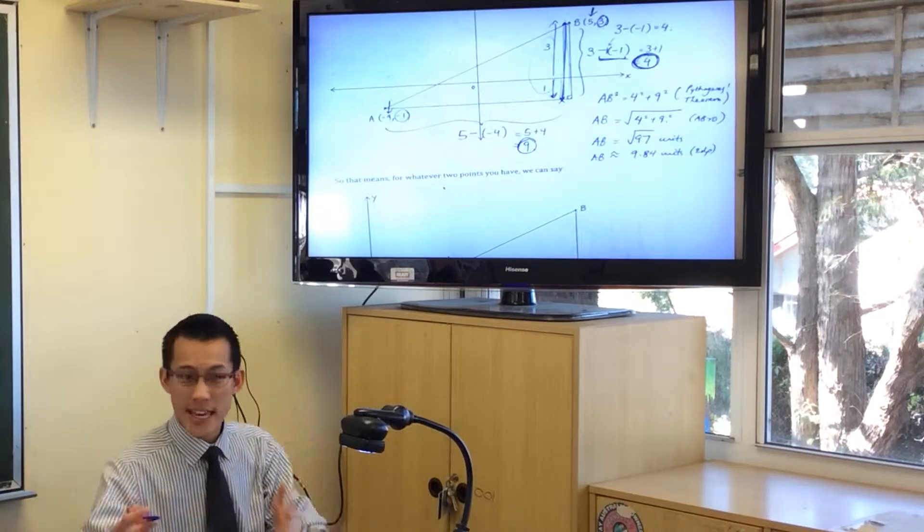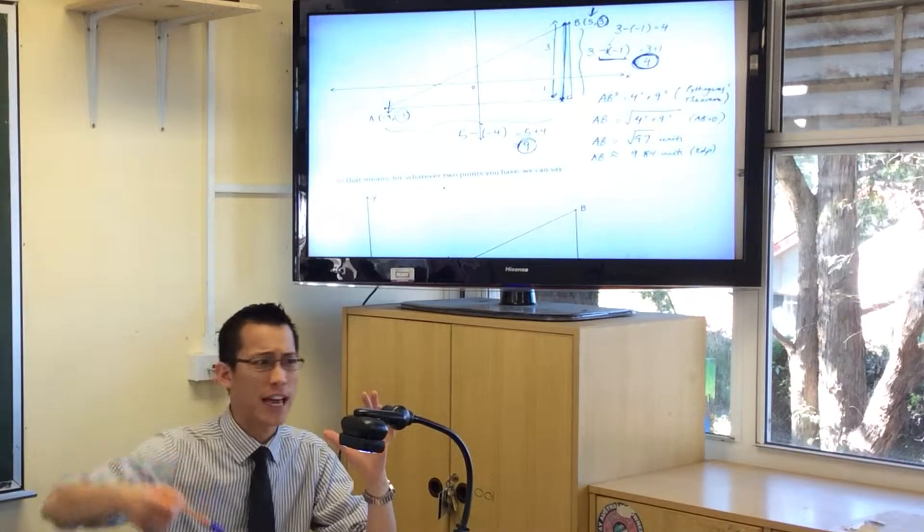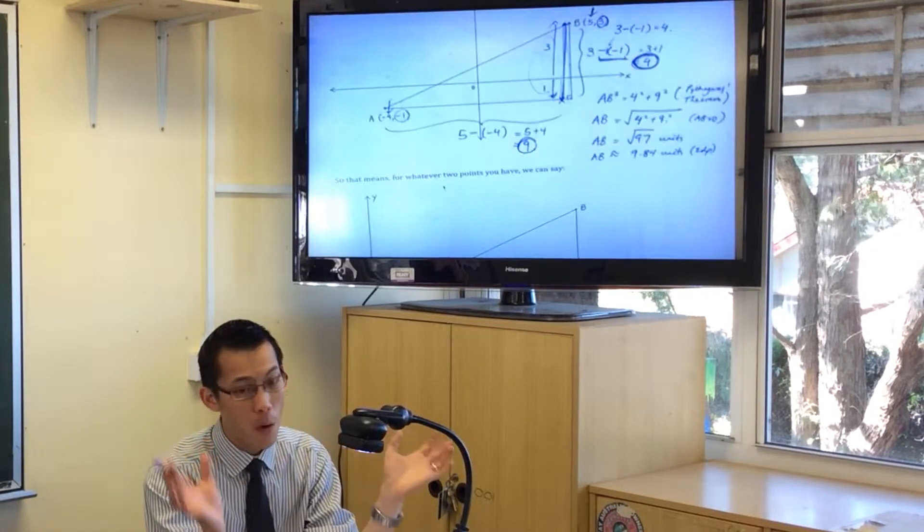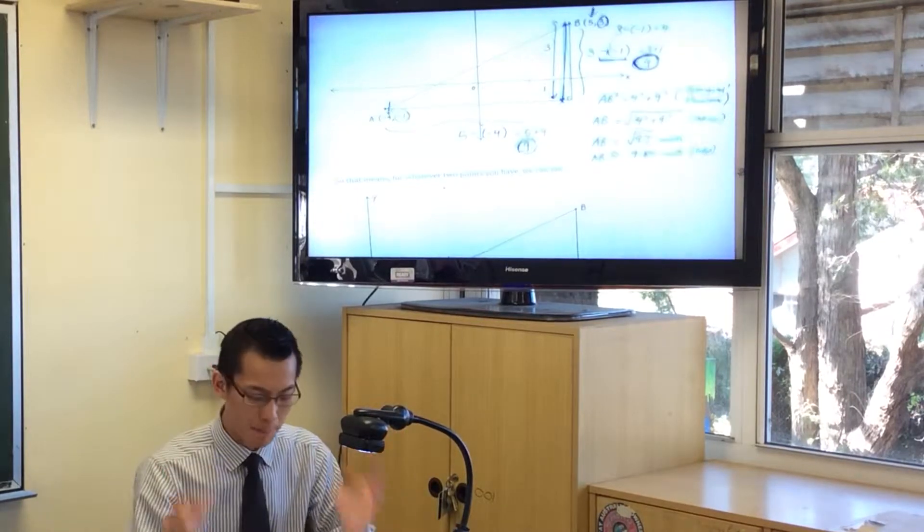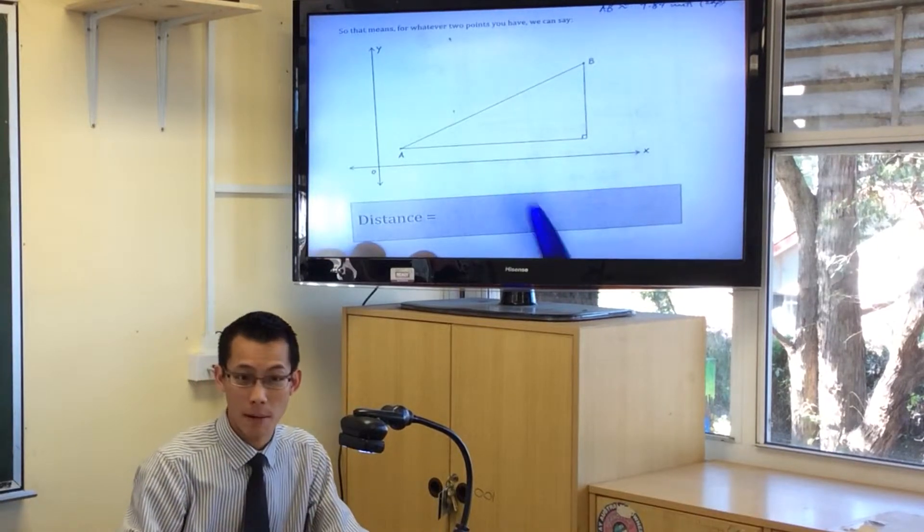Now, what mathematicians do is when they see there's a process, and we go over and over and over again, we can say, look, we can boil this down to, instead of a series of steps, I can boil it down into a formula, and that's what we're going to do in this last part.